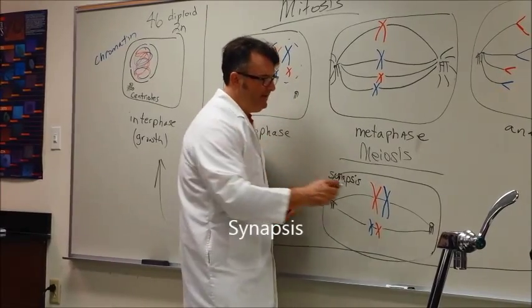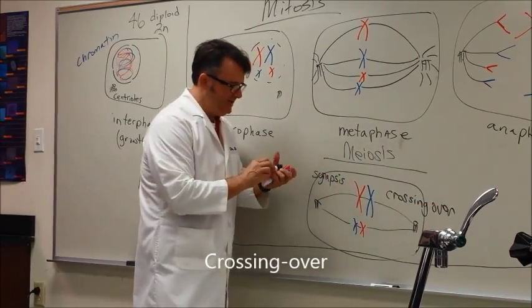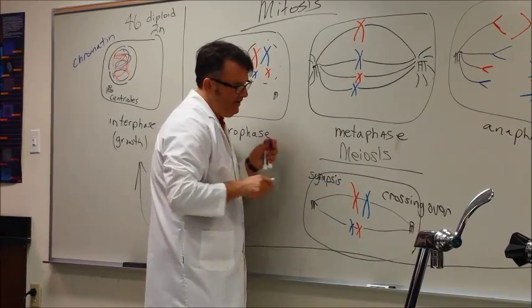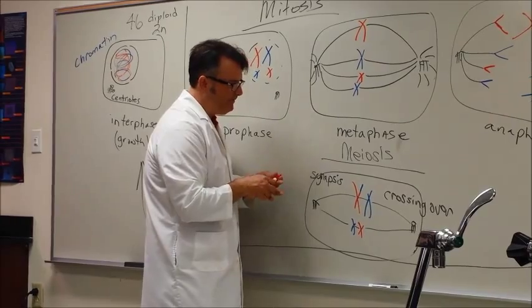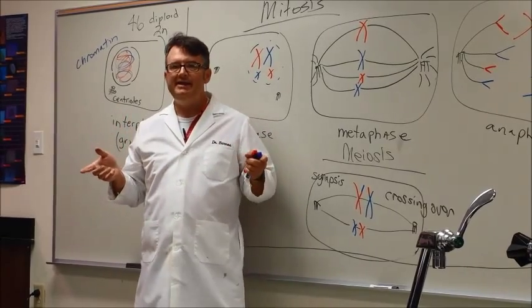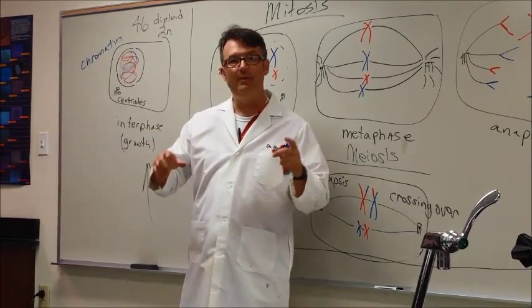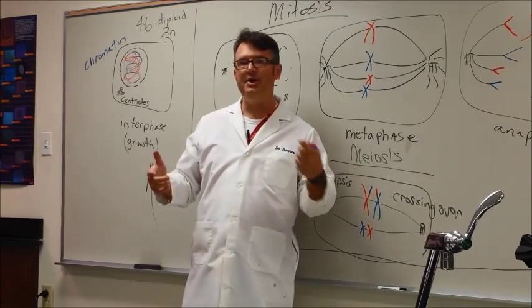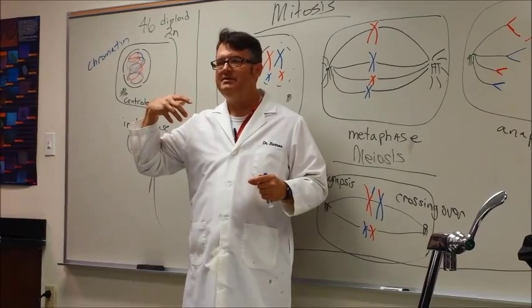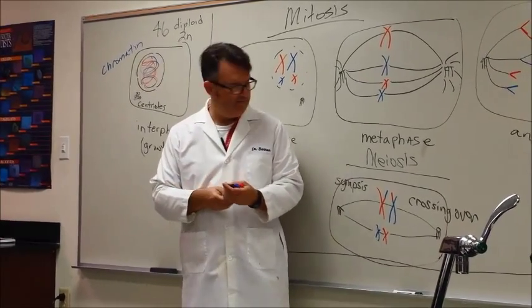Because they're together, there is a wonderful thing called crossing over that happens. What happens is the tip of this blue one may exchange with the tip of that red one. So now the red one has a little bit of the blue chromosome, and the blue one has a little bit of the red chromosome. In the end, what this means is that every sperm of your dad's, every egg of your mom's is a little bit different than the last one. It provides diversity. Everybody's not the same.